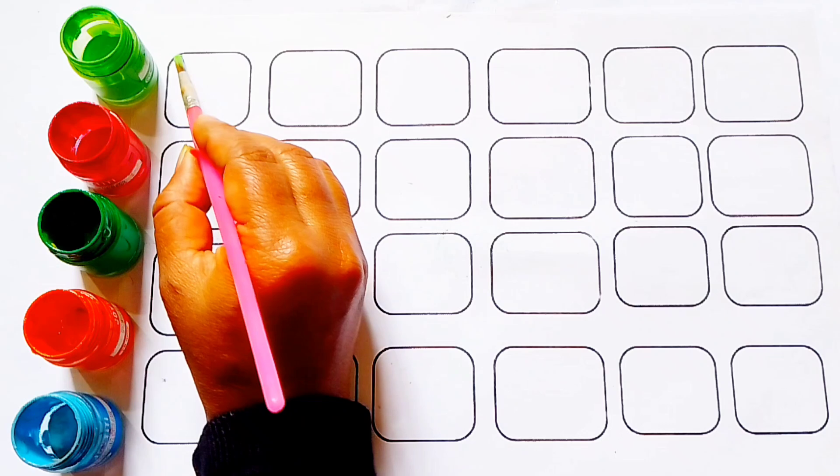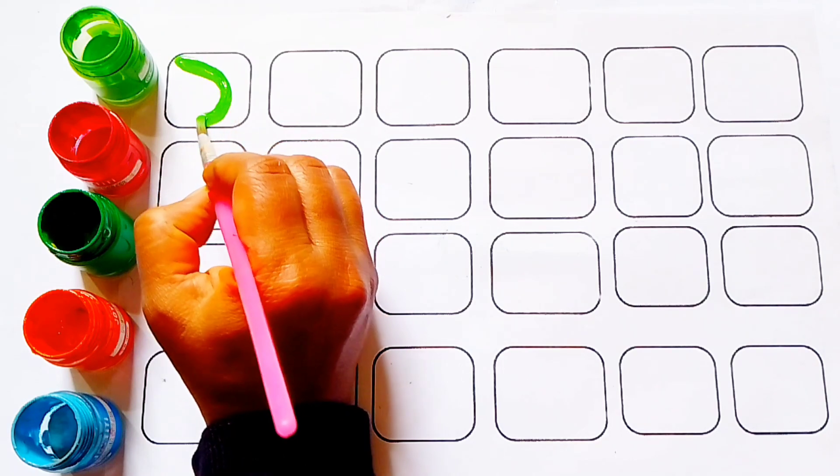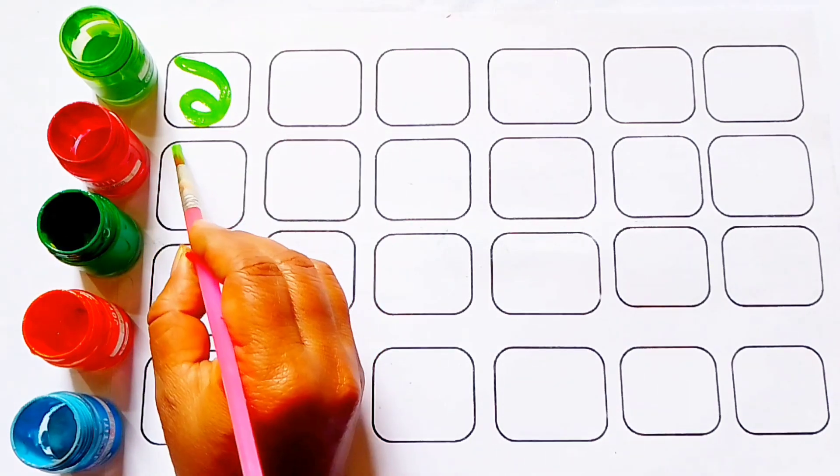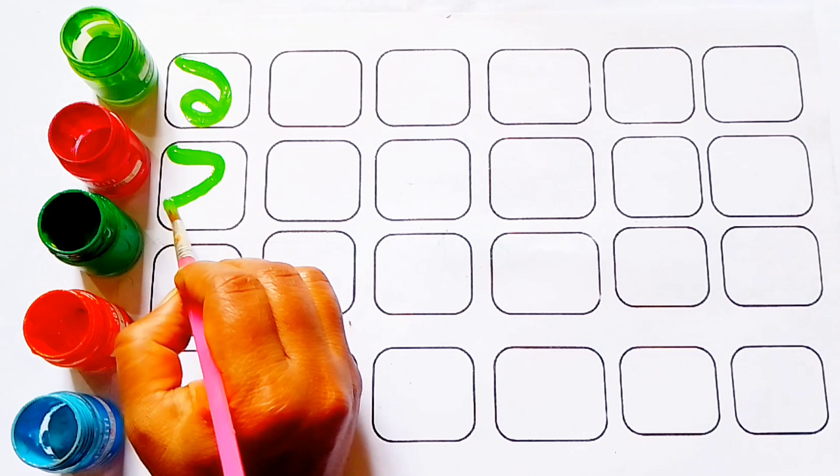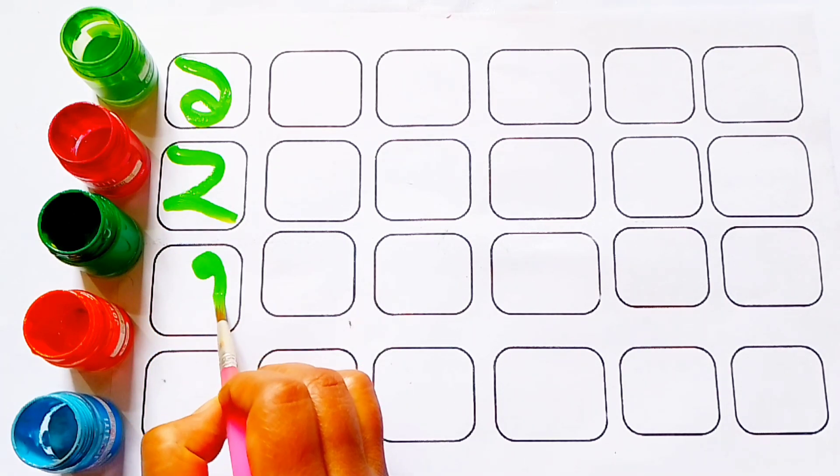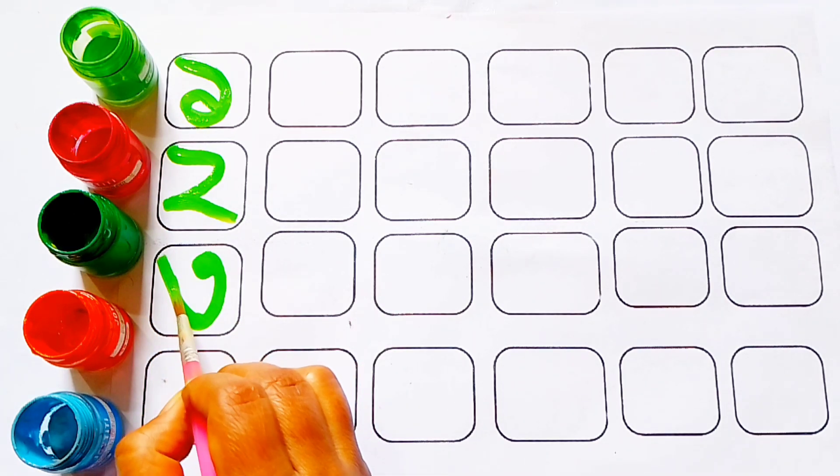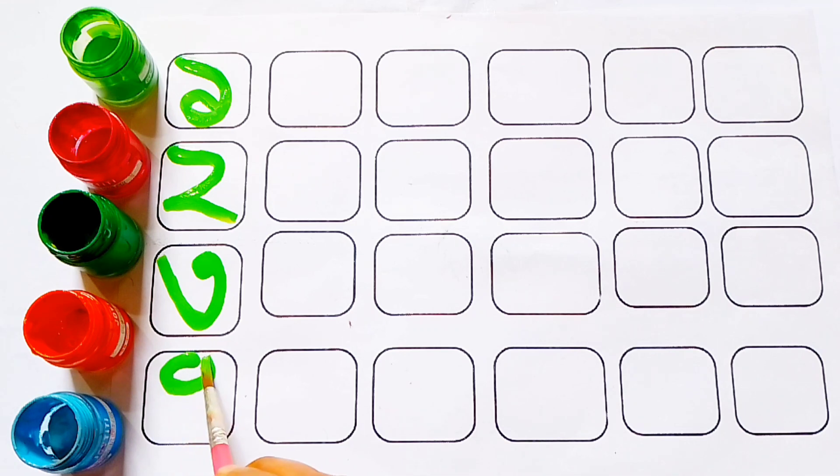Let's writing numbers. Green color. Aek (1), dooy (2), teen (3), char (4).